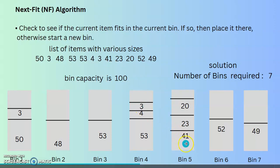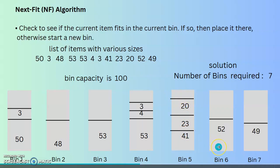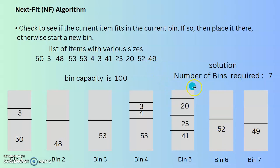So we go for a fifth bin with 41. Next, 23 and 20 can both be placed in bin 5. But 52 cannot be placed in bin 5 due to the maximum size of 100, so we go for bin 6 with 52. The last item, 49, cannot be accommodated in bin 6, so we go for bin 7 with 49. The total number of bins required according to the Next Fit algorithm is 7.